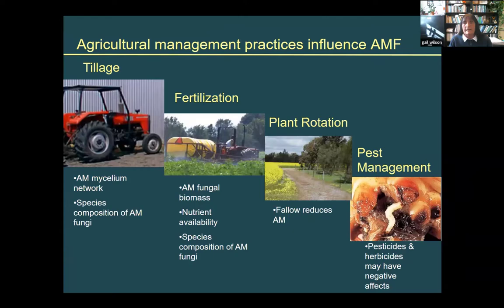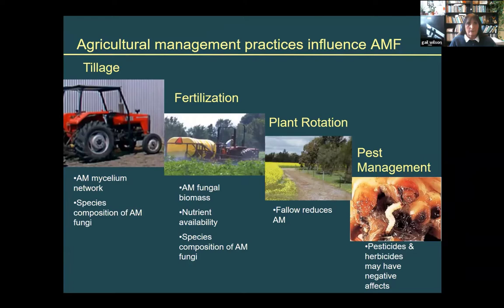Fallow would also have an effect, because the fungi get 100% of their carbon from the plant — if there's no plant there, that's going to be detrimental to the fungal community. And fungicides obviously have a negative effect: if you're going to kill fungi, you're going to kill these symbiotic fungi as well. To reiterate, tillage really is not good for these soil microorganisms.